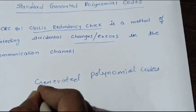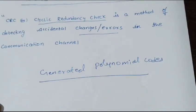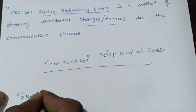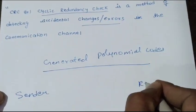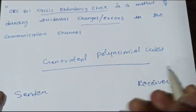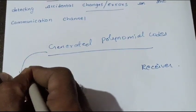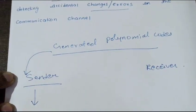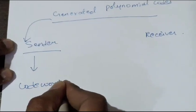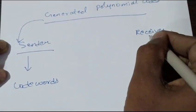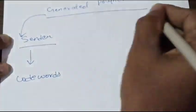These generated polynomial codes are components that should be at the sender and receiver side. At the sender side, these polynomials will help to generate the code words.